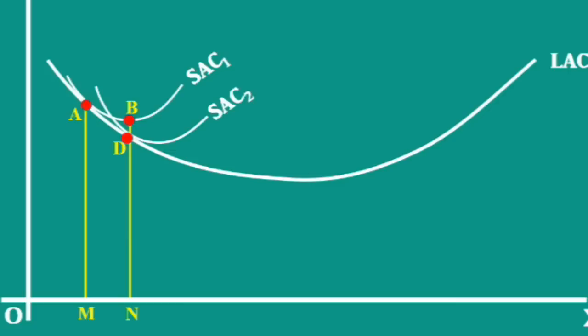Look, SAC2 is tangent to long run average cost curve at point D. If the firm uses this plant, it can produce the same output N units with a cost of Nd.